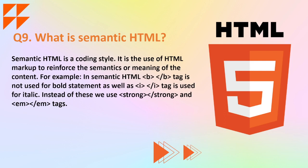Moving on: what is semantic HTML? Semantic HTML is a coding style — it is the use of HTML markup to reinforce the semantics or meaning of the content. For example, in semantic HTML the bold tag and i tag are not used for bold and italic. Instead, we use strong and em, where em stands for emphasize. Strong and em clearly convey meaning, whereas b and i are not meaningful on their own. Semantic HTML ensures that content is meaningful and descriptive.